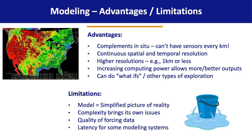Like any tool, modeling for soil moisture has certain advantages and some limitations. In terms of advantages, modeling complements in-situ data observation because we can't have sensors every kilometer. It provides continuous spatial and temporal resolution, with higher resolutions in many cases of a kilometer or less. With increasing computing power we'll be able to get more and better outputs from the models, and models allow us to do what-ifs or other types of exploration.